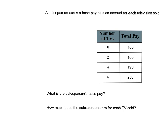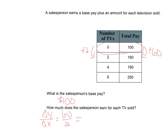The last one is a table. A salesperson earns a base pay plus an amount for each television sold — working on commission. The base pay is what happens regardless, one time. We look for where the x value is 0 because that's the y-intercept. The base pay here is $100. The rate of change is the slope — change in y over change in x. From 100 to 160 we add 60; from 0 to 2 we add 2. So 60 over 2 means this person is making $30 per TV.